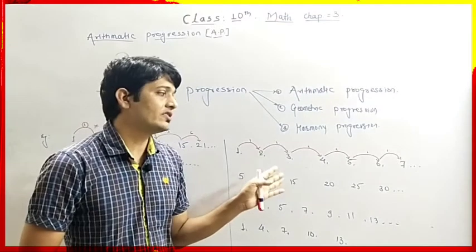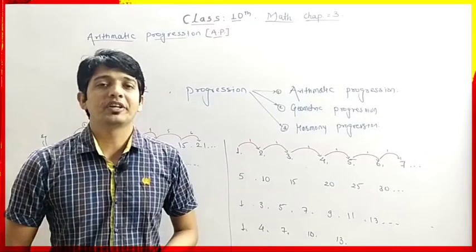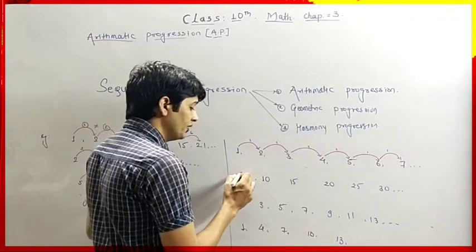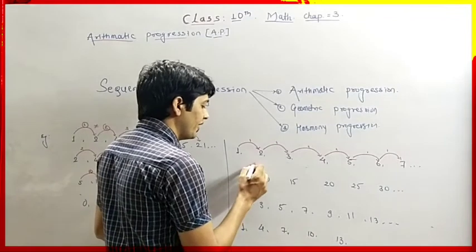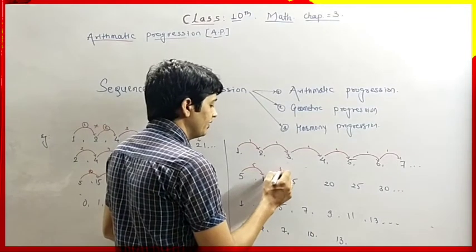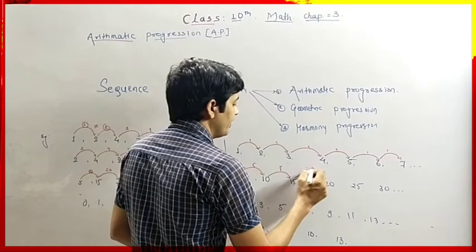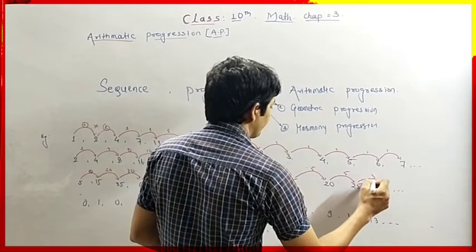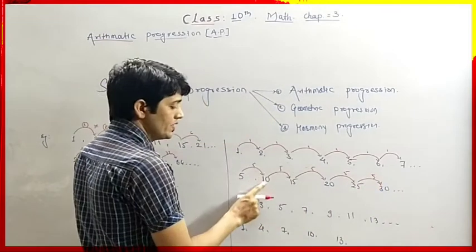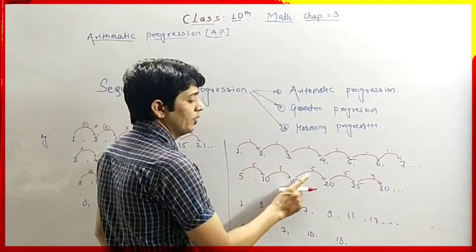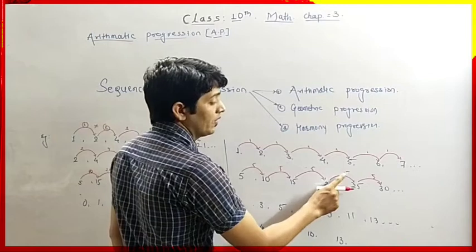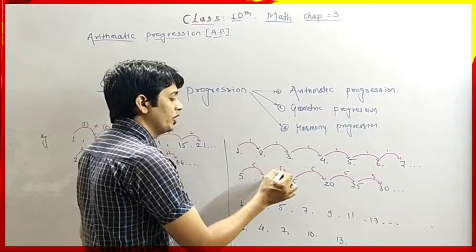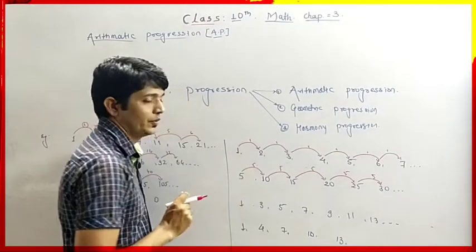That sequence is called Arithmetic Progression. For example, 5, 10, 15, 20, 25, 30 — the difference between two consecutive terms is 5 throughout: 5 plus 5 is 10, 10 plus 5 is 15, 15 plus 5 is 20, 20 plus 5 is 25, 25 plus 5 is 30. The difference between two consecutive terms is always the same — 5.